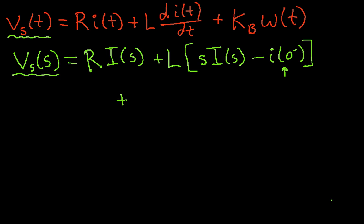And then we'll have finally K sub b times omega of s, the Laplace transform of the radial velocity omega of t. Okay. So, that's the Laplace transform of the first term.